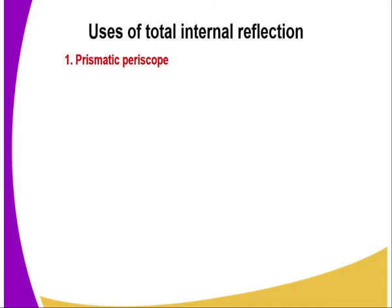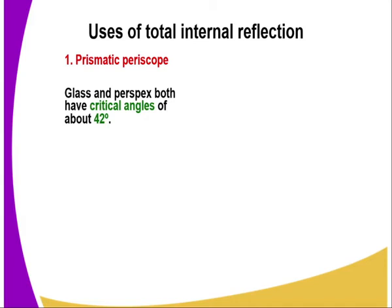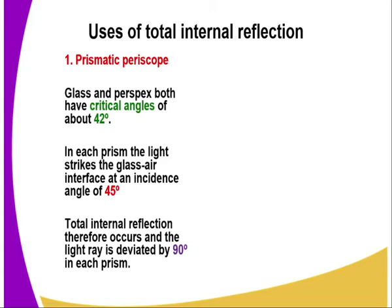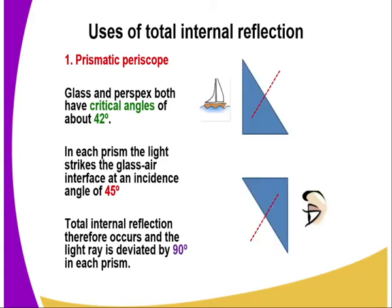One example is periscope, or prismatic periscope. Here we have glass and perspex, which have both a critical angle of about 42 degrees. So in each prism, the light strikes the glass-air interface at an angle of incidence of 45 degrees, where total internal refraction occurs and the light is deviated at an angle of 90 degrees in each prism towards the observer's eye.